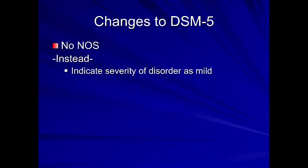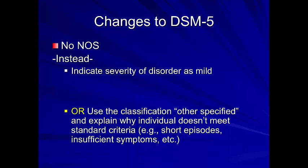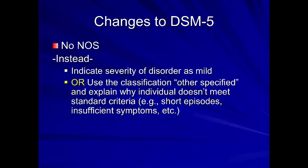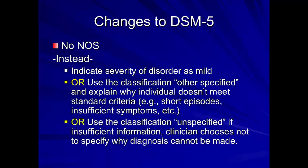There's no NOS anymore. Instead, we indicate the severity of the disorder as mild, moderate, or severe. Or we can use 'other specified' and then explain why the person didn't meet the criteria — for example, the episode was short or there were insufficient symptoms. We can also use 'unspecified' if there's insufficient information or a diagnosis is not made for a variety of reasons.